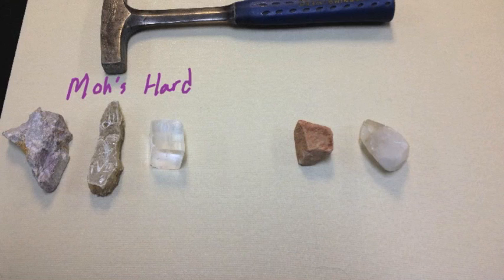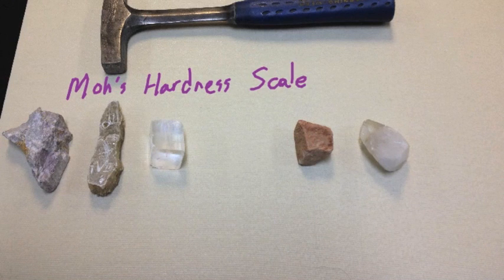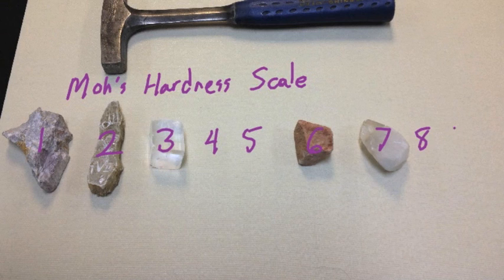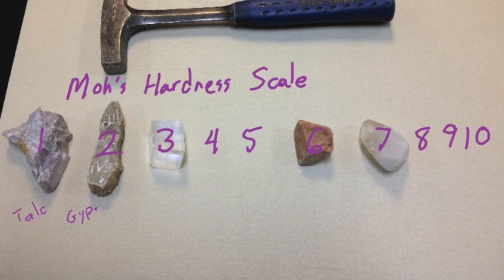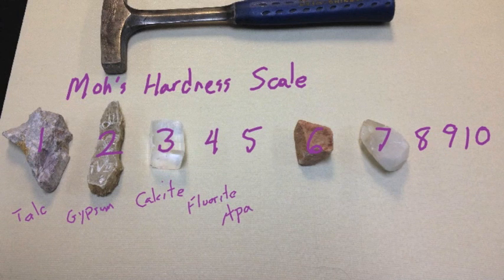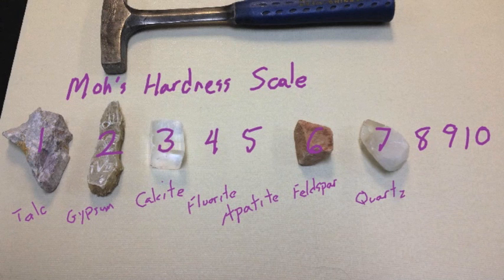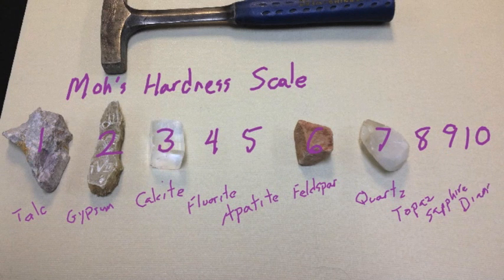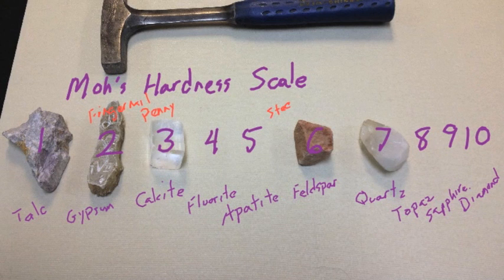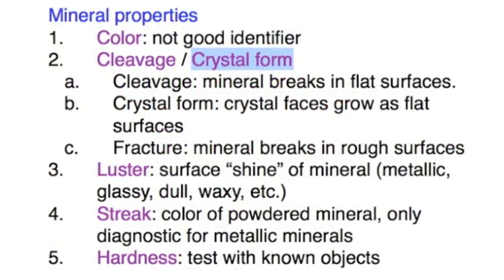Here's a quick overview of the Mohs hardness scale. We have five minerals in our boxes that are actually on the scale. Number one is talc, number two is gypsum, three is calcite. Not in our box is fluorite, then apatite, then feldspar, quartz, topaz, sapphire, and diamond. We test these with some known objects such as fingernails at about two, pennies at about three, steel at about five and a half, and glass at about six.